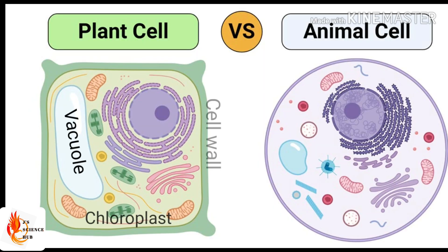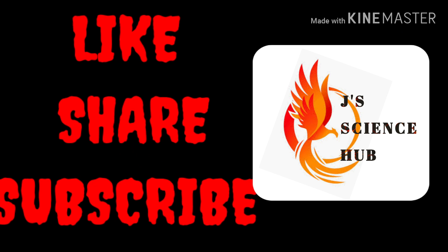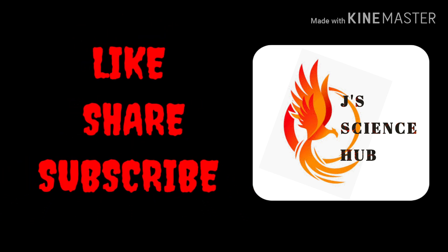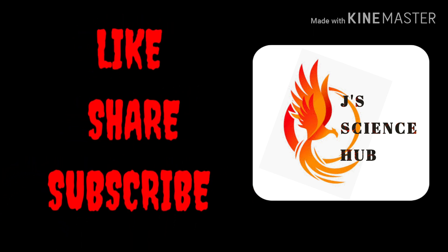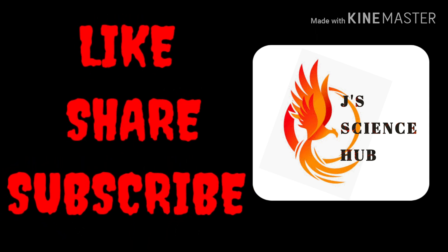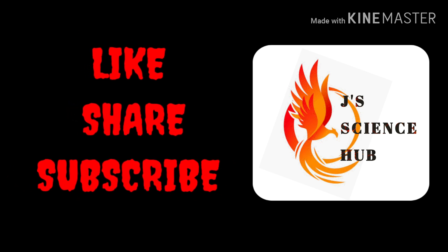So today we studied about the three main differences between plant and animal cells. Hope you all understood the video. Soon catch you all on the next video about cell organelles present in plant and animal cells.